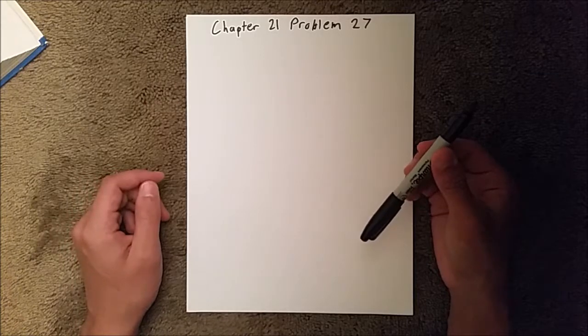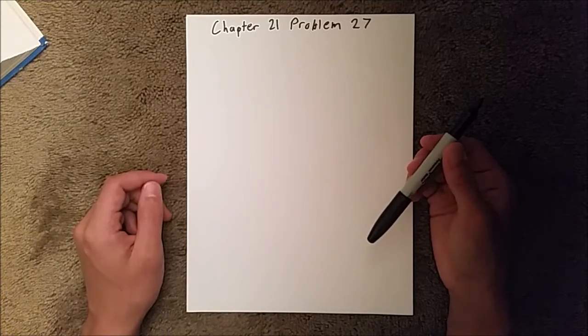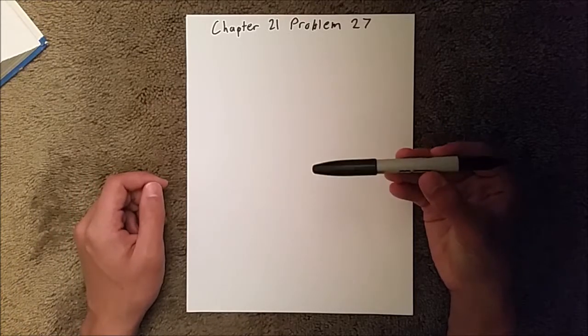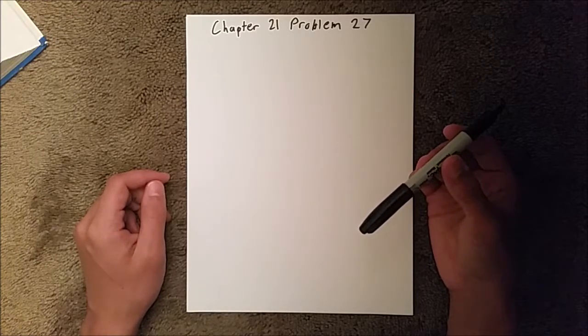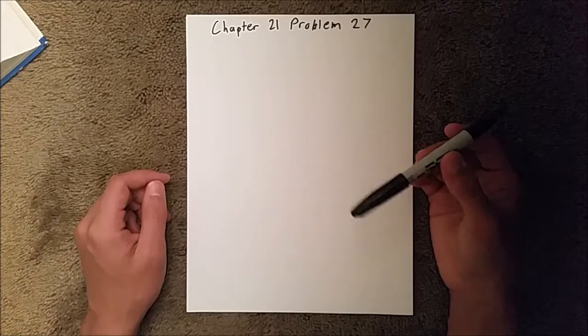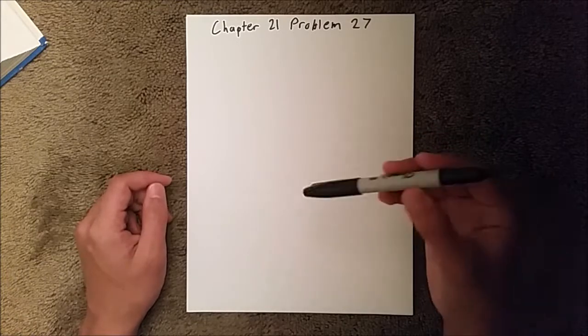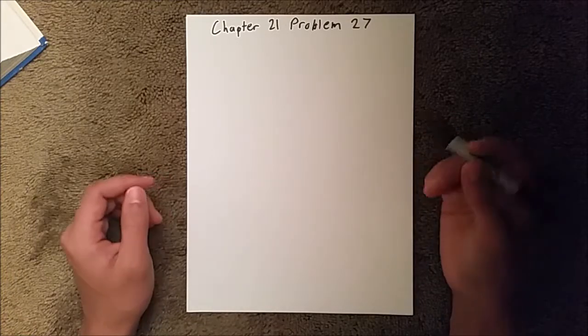Chapter 21 is all about electric charge, and in Problem 27, we are told that a piece of metal has a certain amount of charge, and we need to find out how many electrons would have to be removed to achieve that charge.